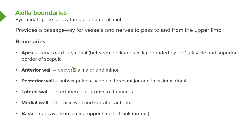The apex of the axilla is known as the cervico-axillary canal, located between the neck and the axilla. This canal is bounded by rib 1, the clavicle, and the superior border of the scapula — so the clavicle, rib 1, and the scapula form the boundaries of this apex.